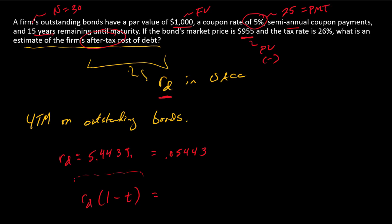So this is what we want. So RD times 1 minus the tax rate is 0.05443 times 1 minus the tax rate of 26%. And that is 0.0403. So there's the answer. So that's after-tax. This number here, we would call a pre-tax cost of debt.